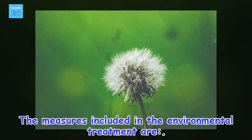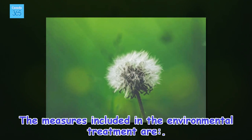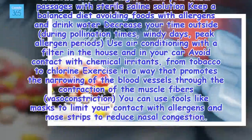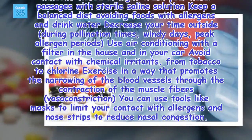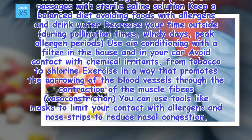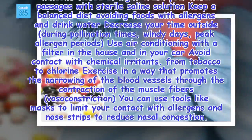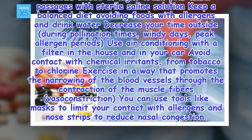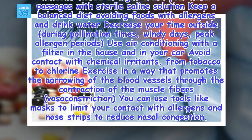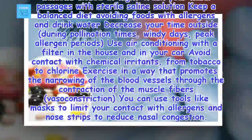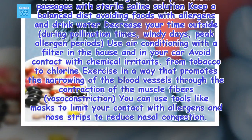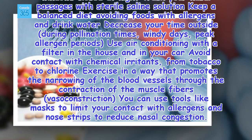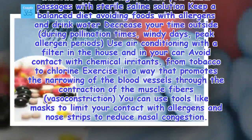The measures included in environmental treatment are: avoid drastic changes in temperature, keep the windows closed at night, wash your nasal passages with sterile saline solution, keep a balanced diet, avoid foods with allergens, and drink water. Decrease your time outside during pollination times, windy days, and peak allergen periods. Use air conditioning with a filter in the house and car, avoid contact with chemical irritants from tobacco to chlorine, exercise to promote vasoconstriction, and use tools like masks to limit contact with allergens and nose strips to reduce nasal congestion.